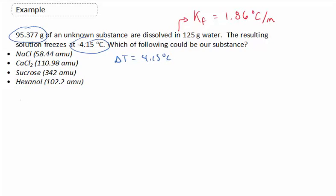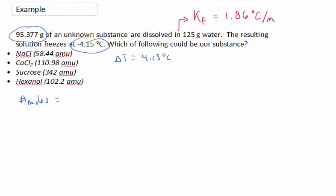So the number of moles of solute is equal to the change in temperature times the mass of our solvents in kilograms, all divided by our Kf. Our Kf is given to us, or it should be, for the problem. So for water, it's 1.86 degrees C for every mole that we have of our solution.